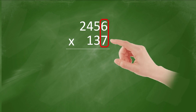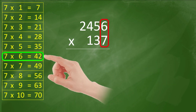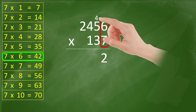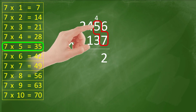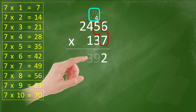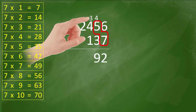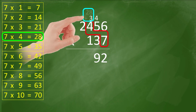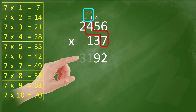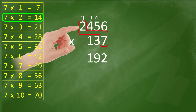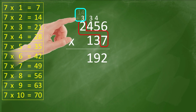Let's begin multiplying. 7 times 6 — check your multiplication table if you haven't mastered it yet — equals 42; 2 stays, carry 4. 7 times 5 equals 35, plus 4 equals 39 — 9 stays, carry 3. 7 times 4 equals 28, plus 3 equals 31 — 1 stays, carry 3. 7 times 2 equals 14, plus 3 equals 17.